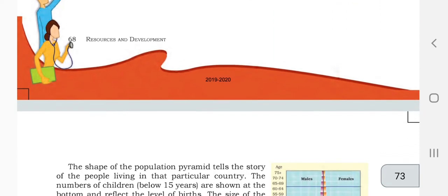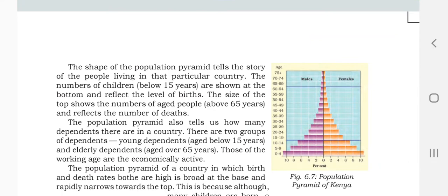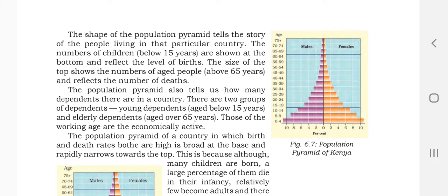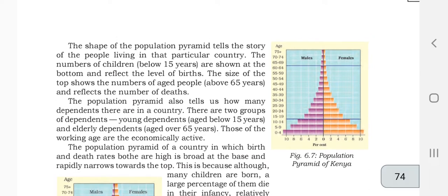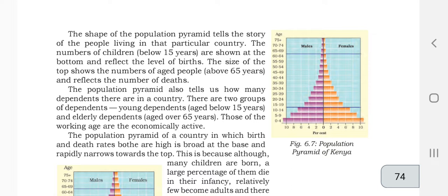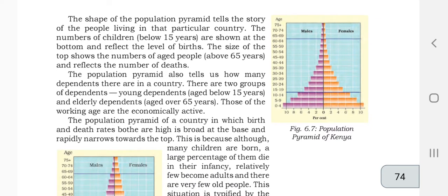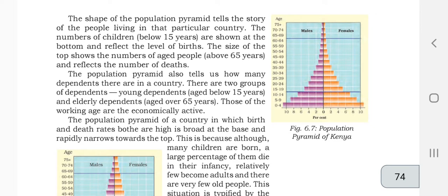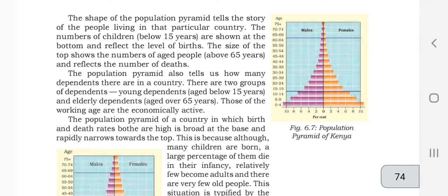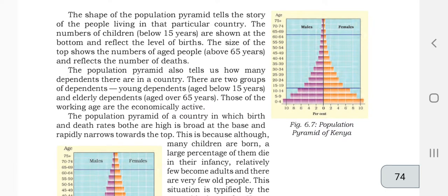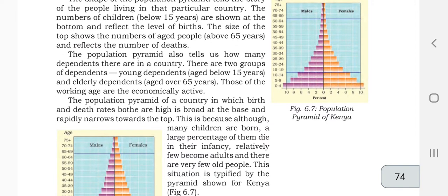A population pyramid shows the percentage of males and females in the country along with their age groups. The shape of the population pyramid tells the story of the people living in that particular country. The number of people below 15 years is shown at the bottom to reflect levels of birth. The size of the top shows the number of aged people above 65 years. The population pyramid also tells us how many dependents there are.